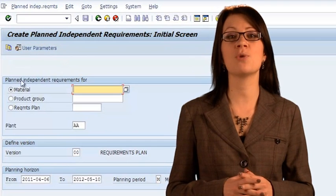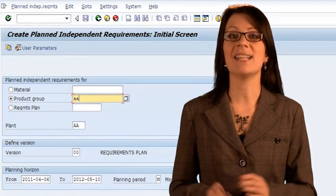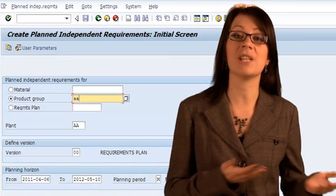At the initial selection screen, choose the product group selection option and enter the product group. It is the same as your company code, your team letter repeated twice.